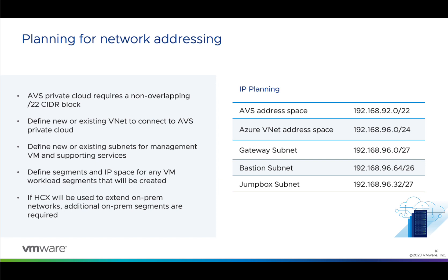We'll need a VNet to connect AVS into, and we'll be deploying a new VNet, so we'll need new IP space assigned to it. We'll also need to create a subnet called Gateway Subnet that will be used to host the virtual network gateway that will connect to the AVS ExpressRoute. We'll be deploying Azure Bastion and a Jumpbox VM to do break glass administration, so we'll also need a subnet for the Azure Bastion service.